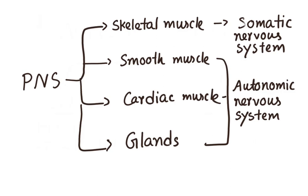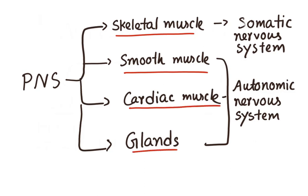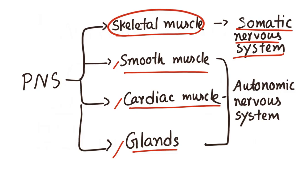The peripheral nervous system supplies four main types of tissues: skeletal muscle, smooth muscle, cardiac muscle, and glands. Skeletal muscle is in our voluntary control, and the other three are involuntary. The branch of the peripheral nervous system that supplies skeletal muscle is called the somatic nervous system, whereas the branch that supplies the other three involuntary tissues is called the autonomic nervous system — this is our today's discussion.